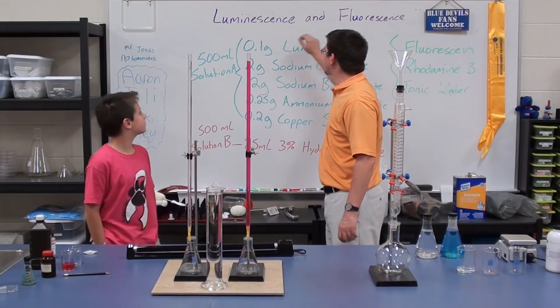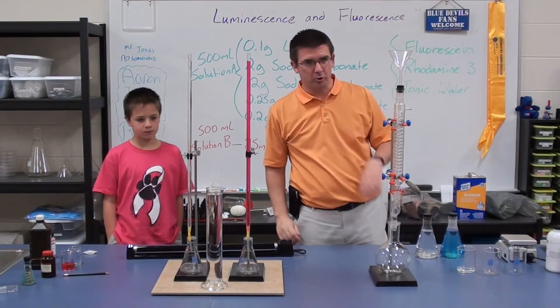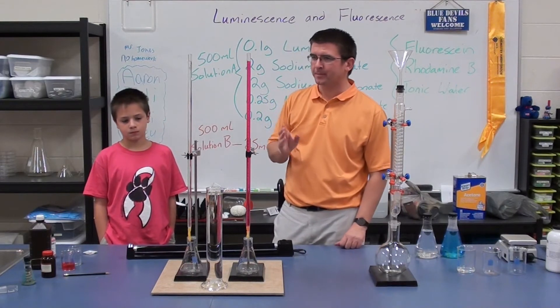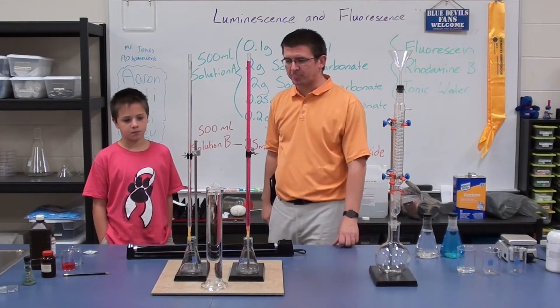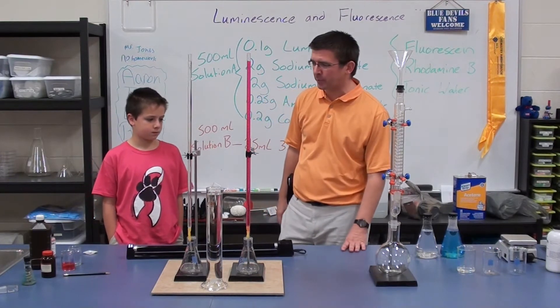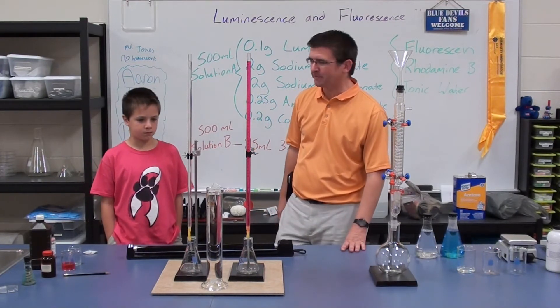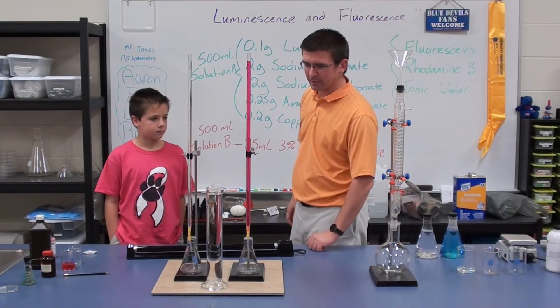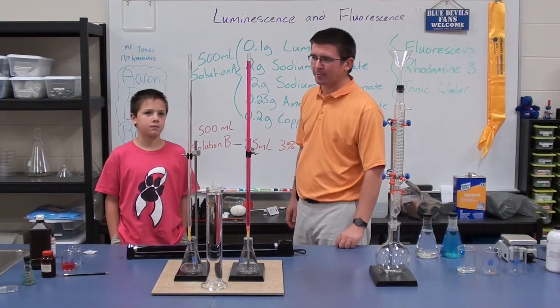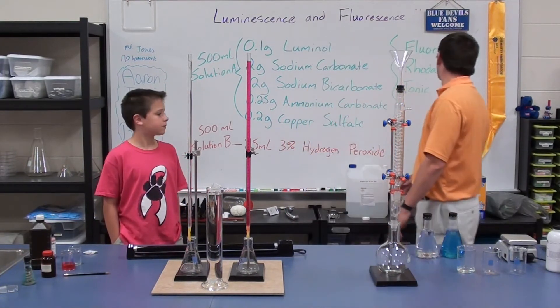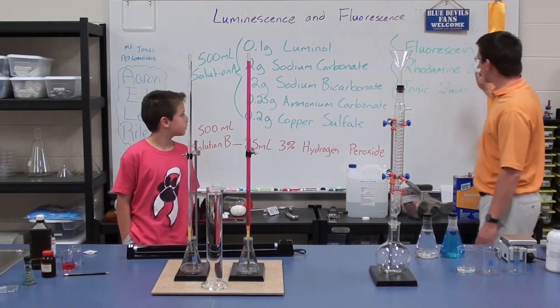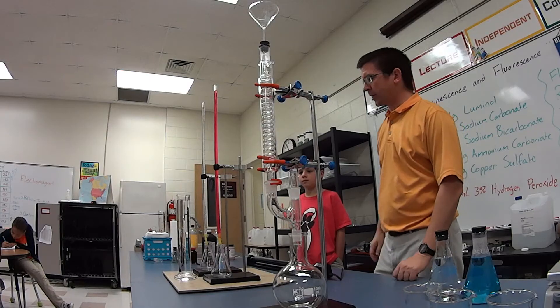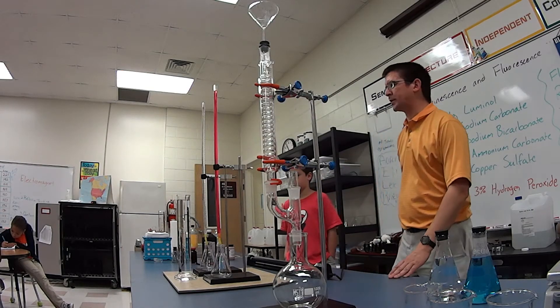We're going to look at some different materials and two different properties: luminescence and fluorescence. In your journal, I want you to describe what you observe for each property, and then afterwards you can tell me if you think they are physical properties or chemical properties. First we're going to look at fluorescence. We've got three fluorescent chemicals: fluorescene, rhodamine B, and tonic water.